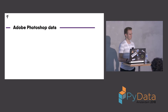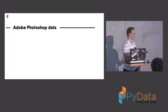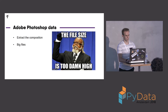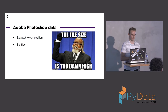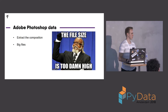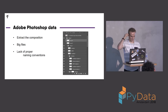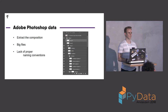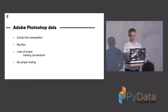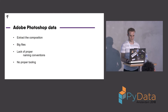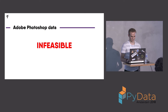Starting off with the Adobe Photoshop data: you can try to extract the layers that are actually important for the composition, so you remove the pancake and the background and the Kruidvat logo, for example. But those files were really big — 1.2 gigabytes per composition. They also had a lack of proper naming conventions. You'd see a layer called 'shampoo', another called 'spray conditioner', but the others don't really say what's in there. So it's hard to write rules to actually extract the compositions. Also there's no proper tooling available in Python — for example PSD tools, but the functionality of that package is really limited. So this was deemed infeasible.